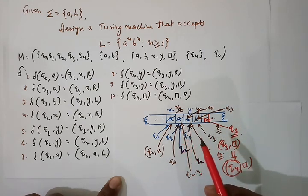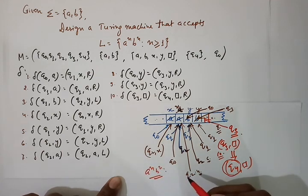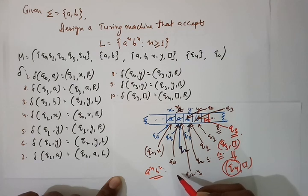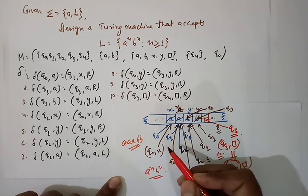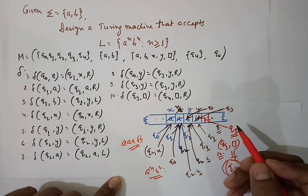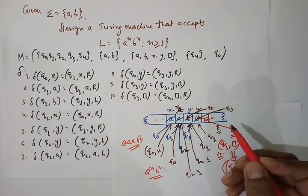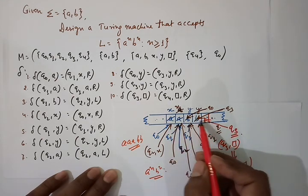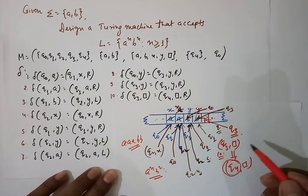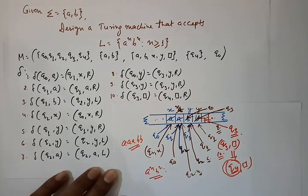If the string is not in the form a^n b^n — for example, 3 a's and 2 b's — we would get stuck in a non-final state. Although the string may or may not be fully consumed, if we halt in a state that is not defined as our final state, the string is not accepted. In our successful case, all a's were replaced by x and b's by y, and we ended in final state q4.